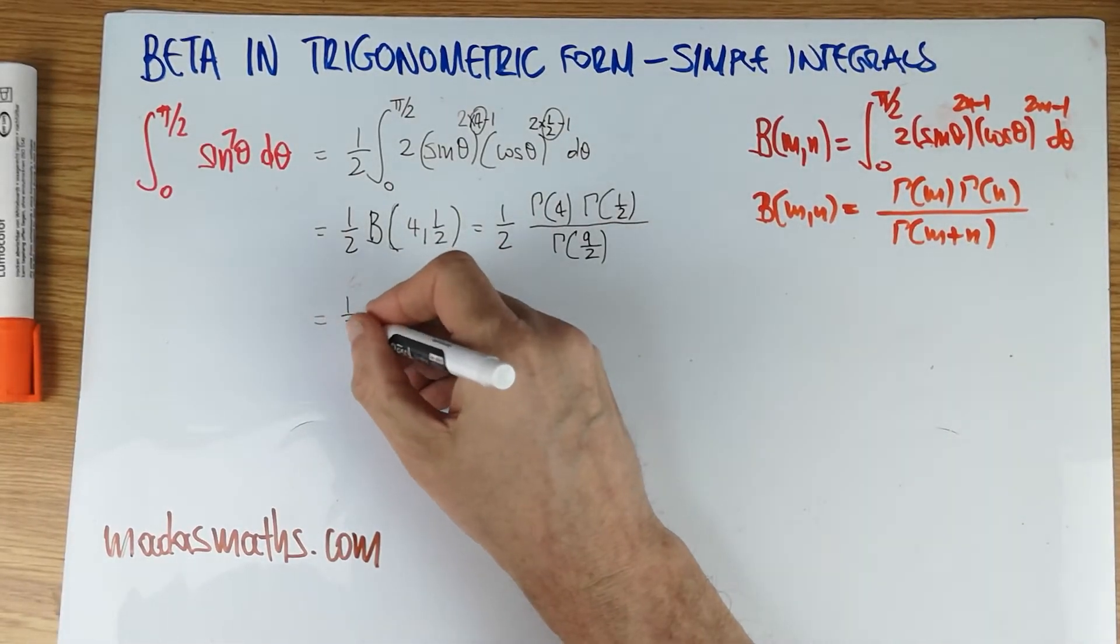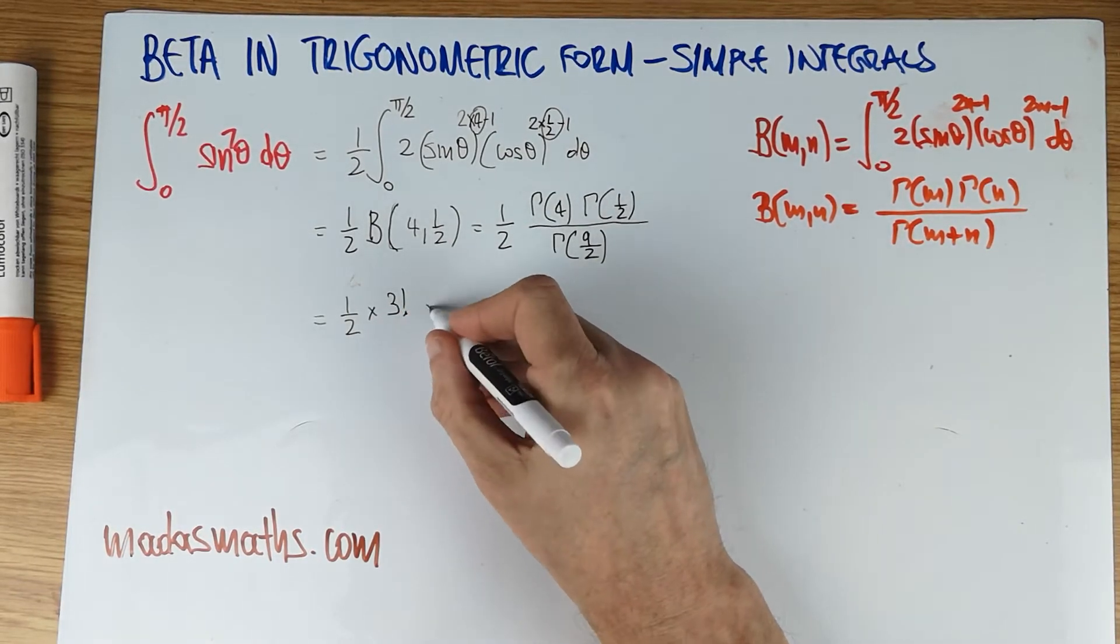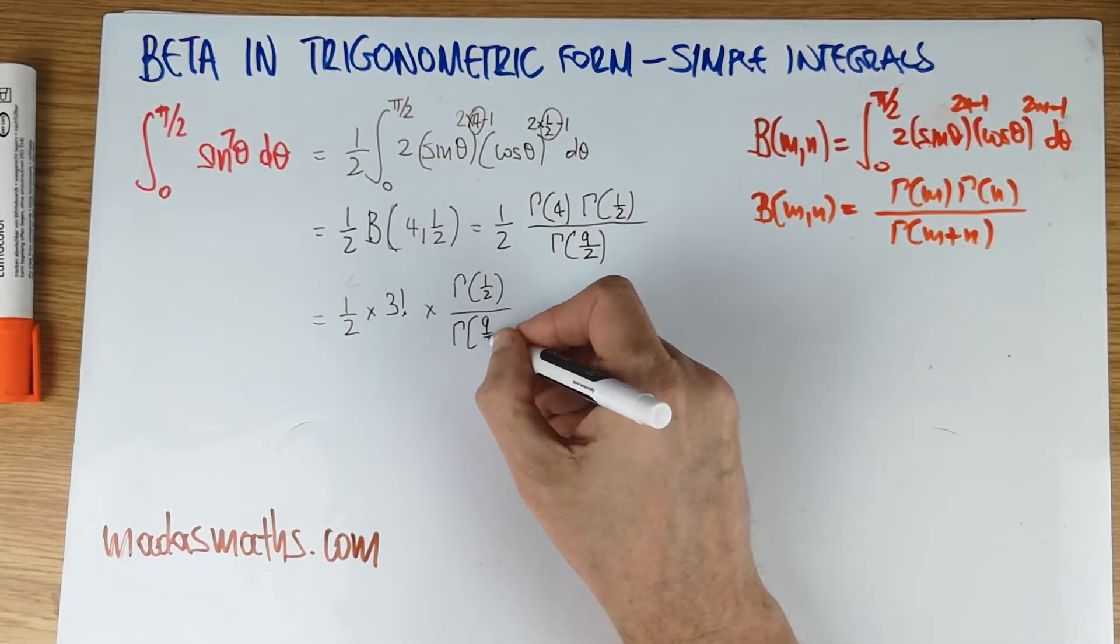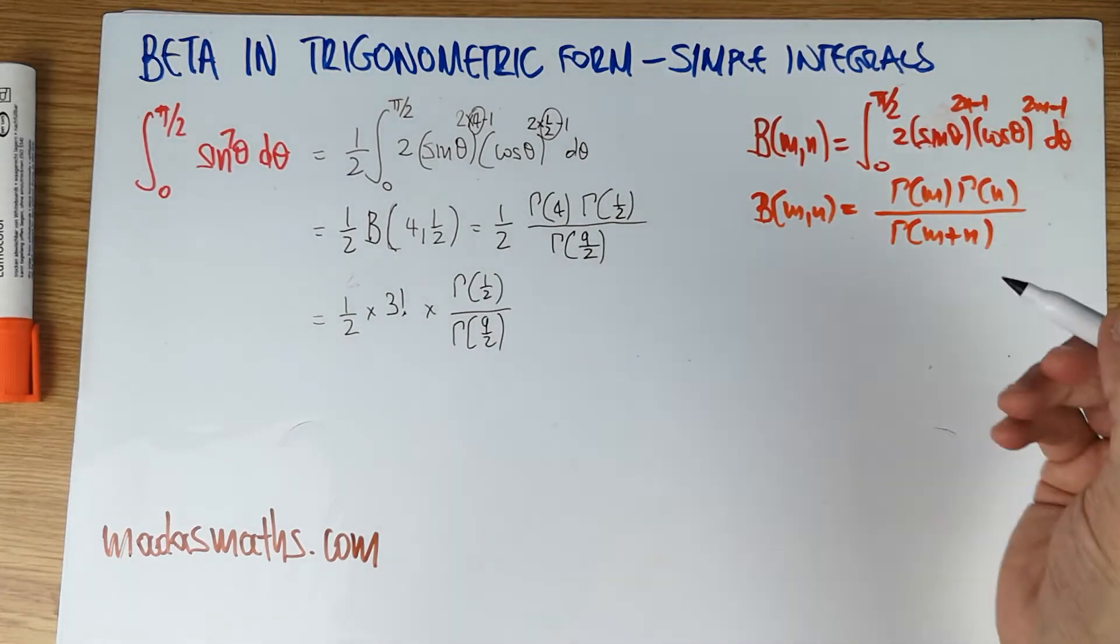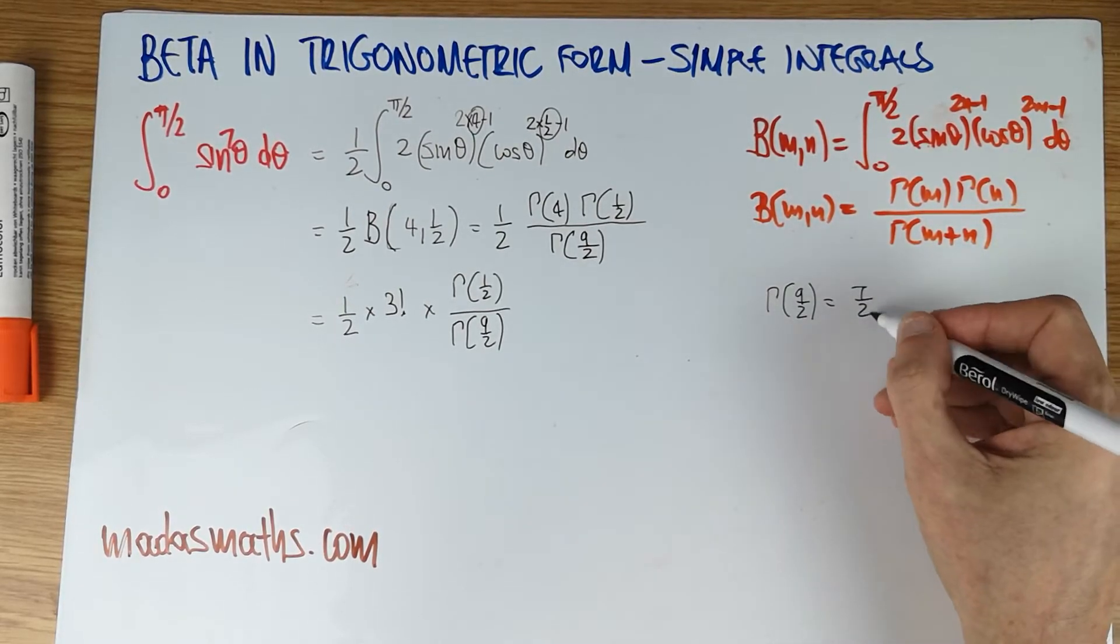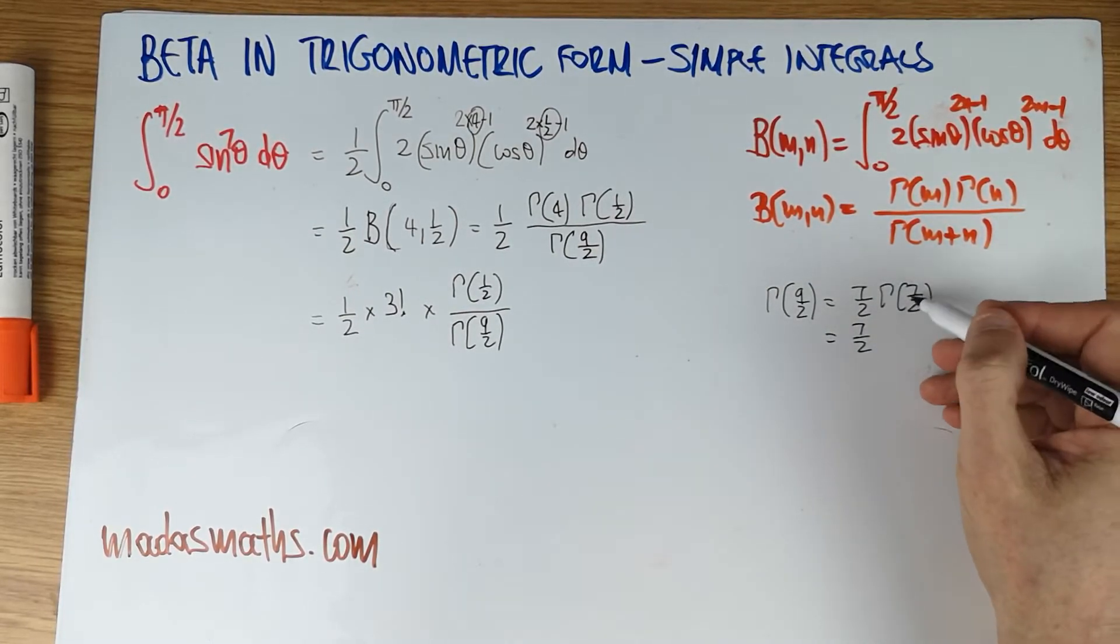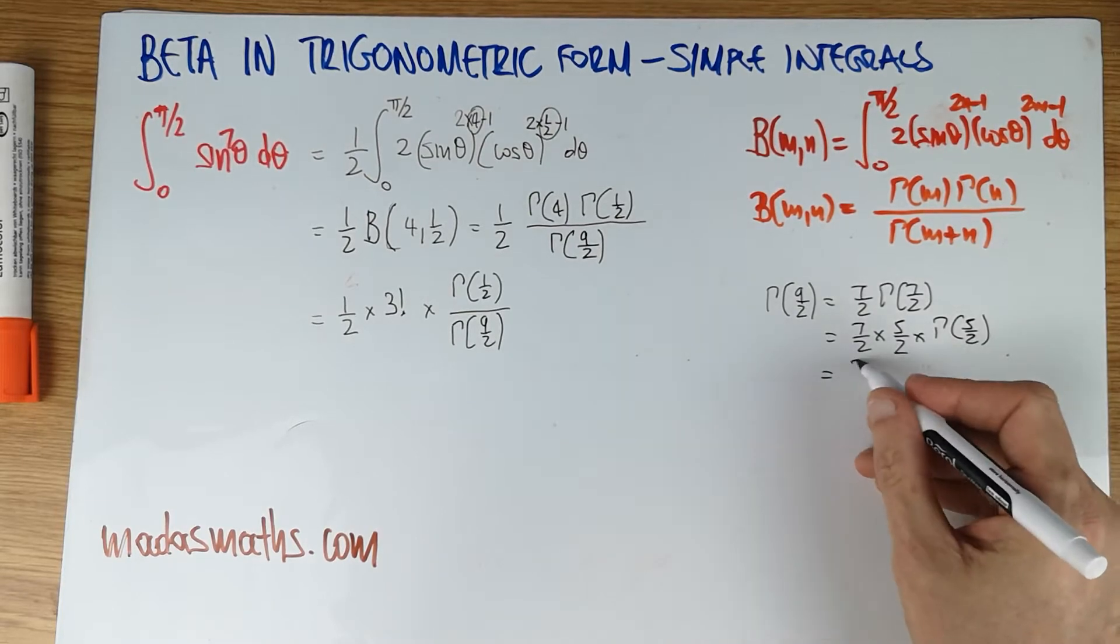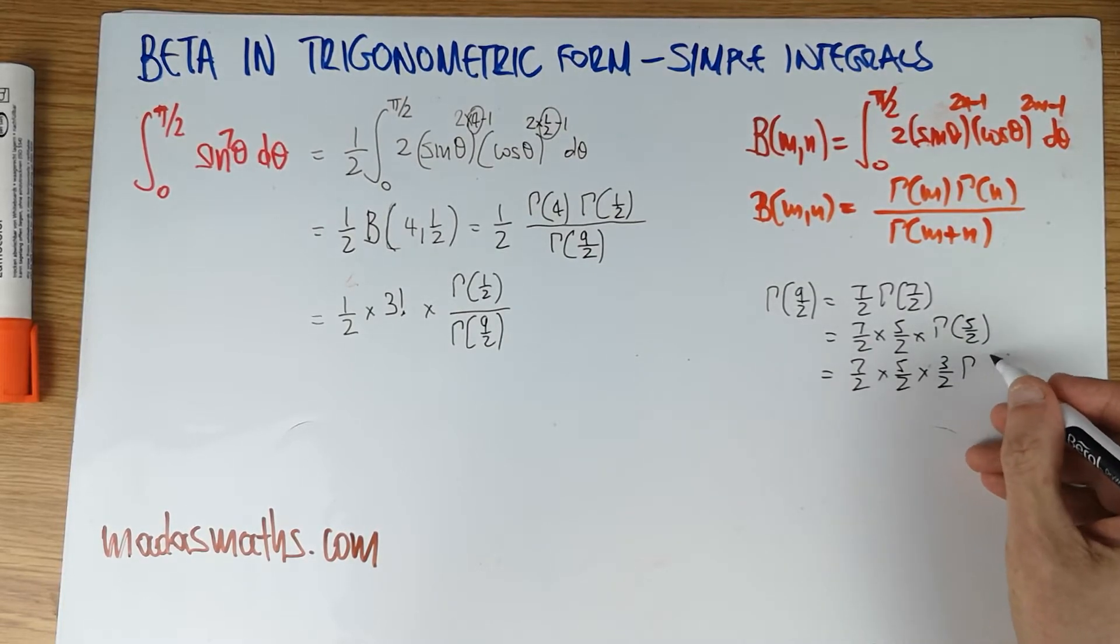Now, that's a half, rewritten. Gamma of 4 is 3 factorial. And I'm going to write this again. And I'm just going to remind you a little bit about the gamma function. This is not really part of the beta, but it's the recurrence relation that says the gamma of 9 over 2 is the same as 7, 1 less, 7 over 2 times the gamma of 7 over 2. And then, of course, we repeat the gamma of 7 over 2, 1 less, so times 5 over 2 times the gamma of 5 over 2. And we can repeat this process. Times 5 over 2, the next one will be, of course, 1 less, 3 over 2, gamma of 3 over 2.